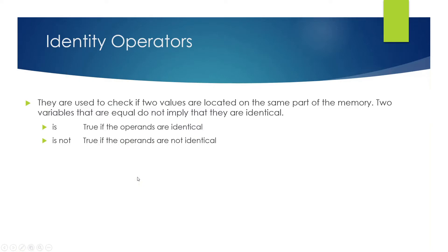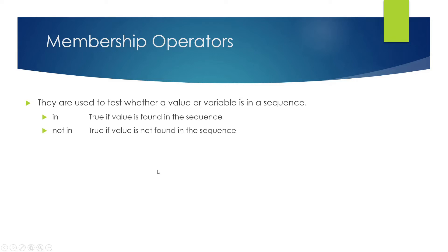Identity operators are used to check if two values are located at the same part of memory, because two variables that are equal do not necessarily mean they are identical. You use 'is' and 'is not'. 'is' is true if both operands are identical; 'is not' is true if the operands are not identical.